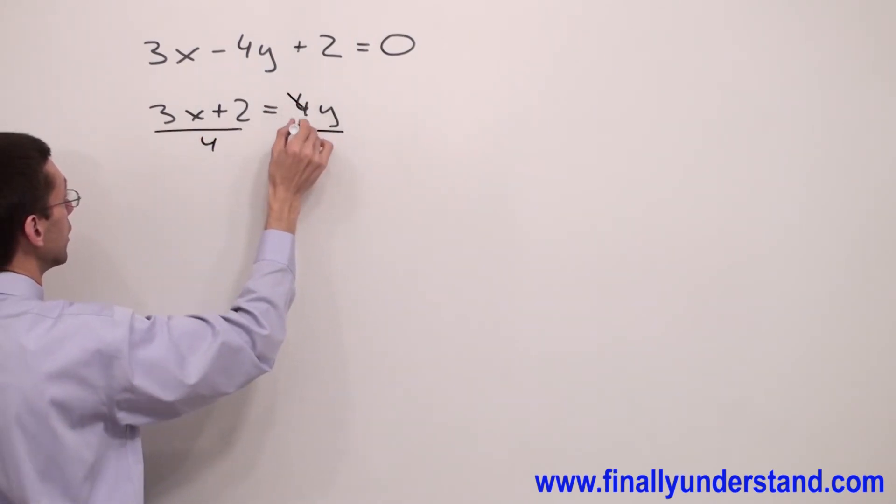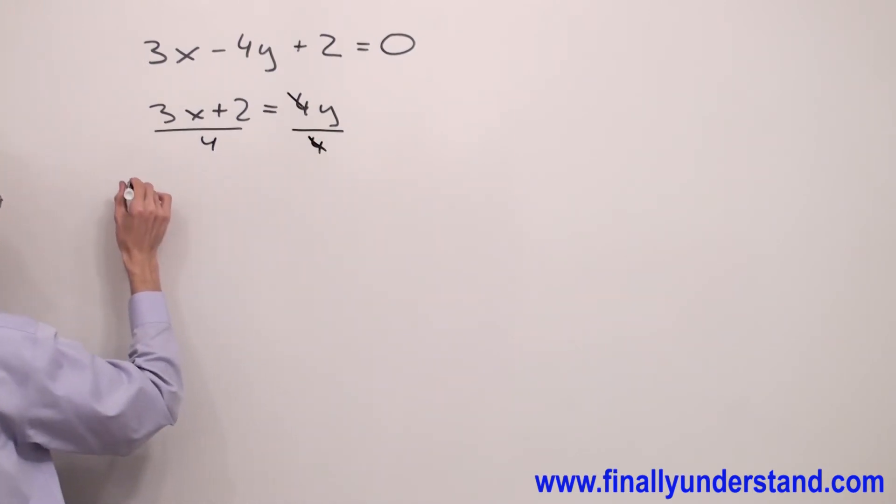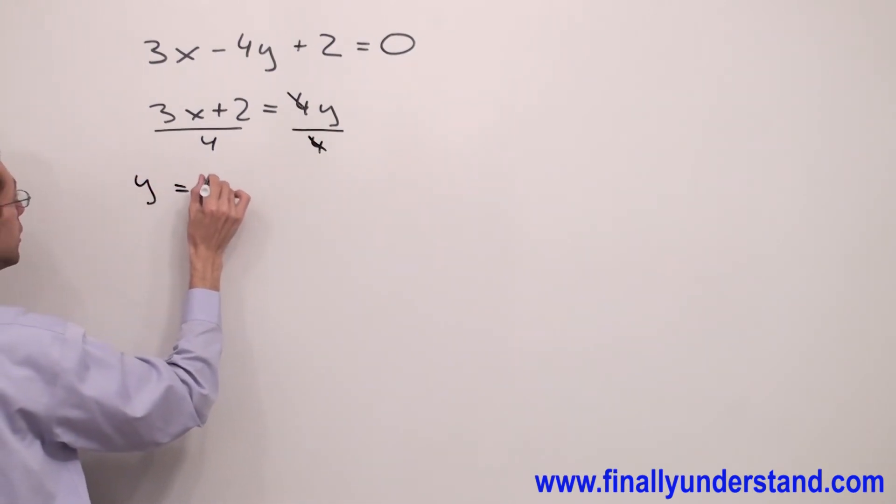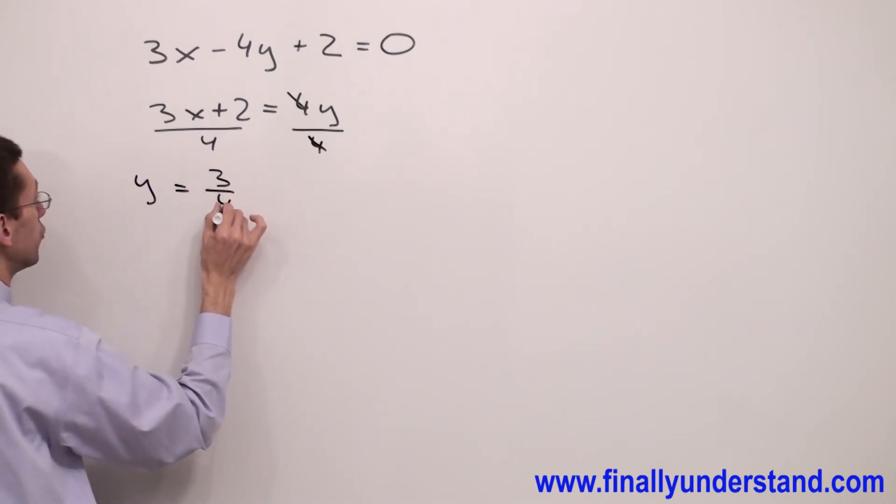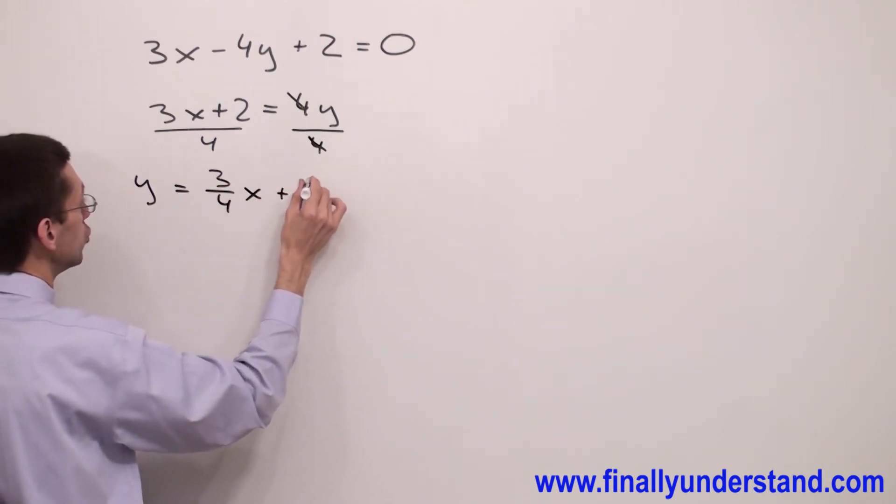So 4 and 4 will cancel out, and I'm going to have y equals 3/4x plus 2 over 4.